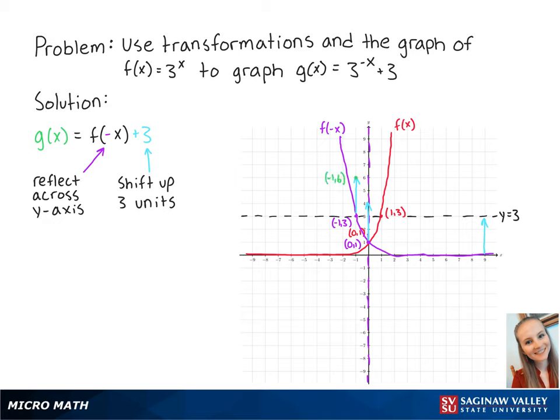So our new points are now at negative 1, 6, and 0, 4. Connecting these points gets the graph of g of x.